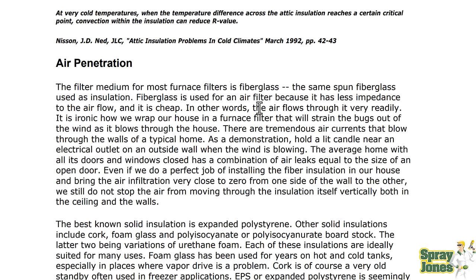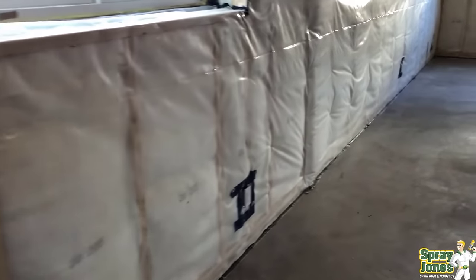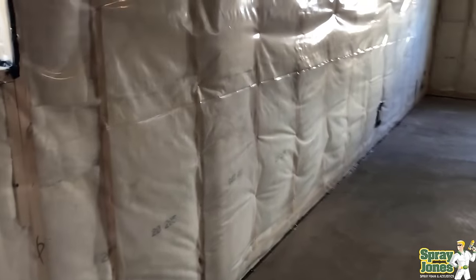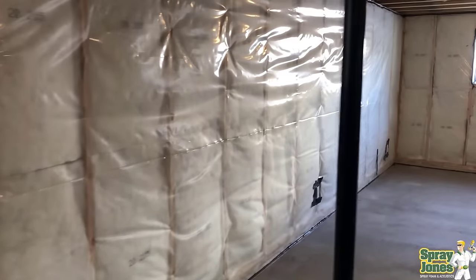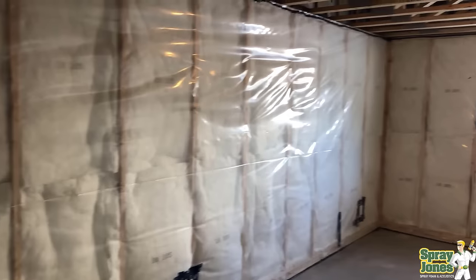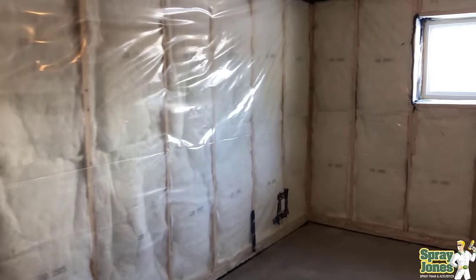Air penetration is a big deal. Fiberglass is used as an air filter because it has a low impedance to airflow — air flows through it very readily. It's ironic how we wrap our house in a furnace filter that will strain out bugs and wind as it blows through the house. A demonstration: hold a lit candle near an electrical outlet on an outside wall when the wind is blowing. The average home with all its doors and windows closed has a combination of air leakage equal to the size of an open door. We can get homes fairly well sealed until we put the sheetrock up.